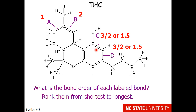Now rank them from shortest to longest. Bond order 2 is the shortest and the strongest. In the middle, we have bonds C and D, which are equal to one another in bond length and bond strength. And for our longest bond, we have bond A.